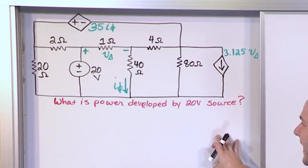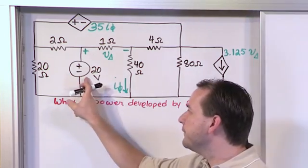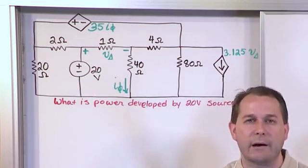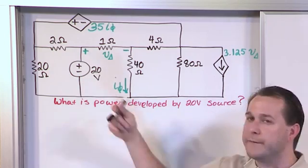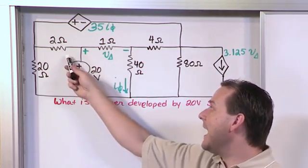So let's get started. First of all, think about what is your end game? What's the power developed by the 20 volt source? Well, here's the 20 volt source. We know that if we're trying to find the power developed by the source, we know the voltage. So to find the power, we need to know the current flowing out of this source.